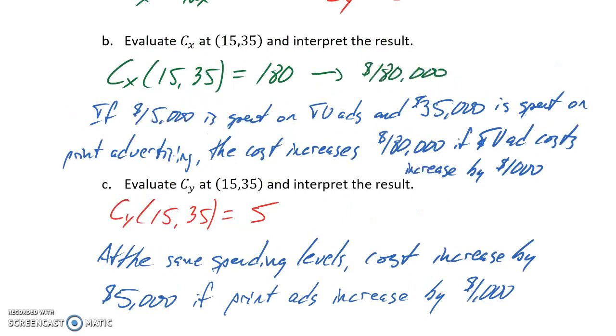With these two results, we could look at where our costs would increase more. If we spend an additional $1,000 on print advertising, our total costs increase $5,000. If we spend an additional $1,000 on television and newspaper advertising, our total costs increase by $180,000.